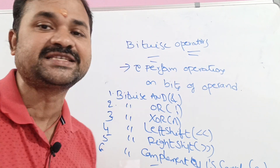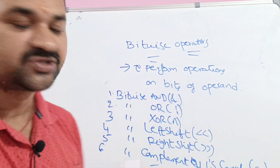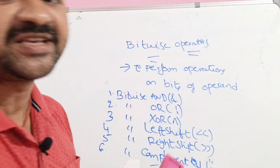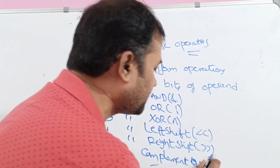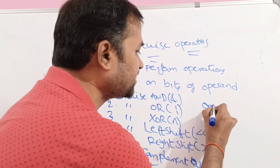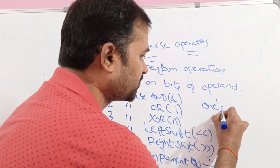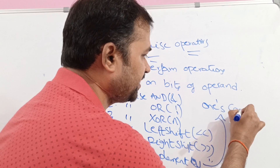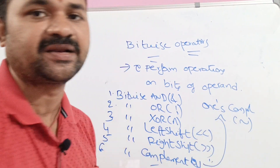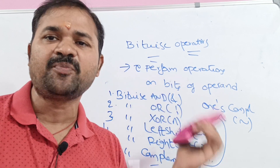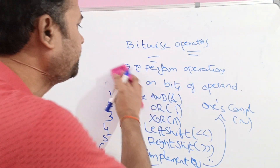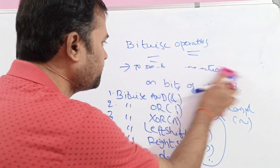The bitwise complement operator is denoted by a single tilde symbol, also called the one's complement operator. We will discuss each one by one with the help of some examples.